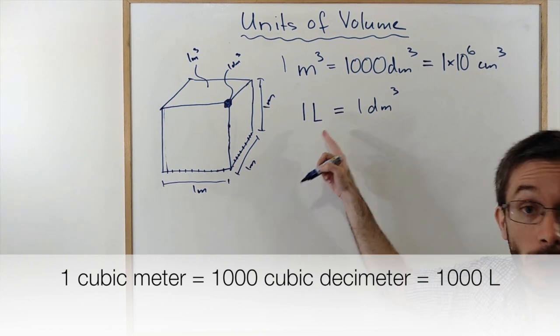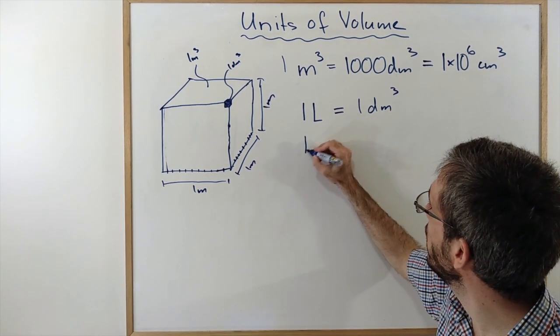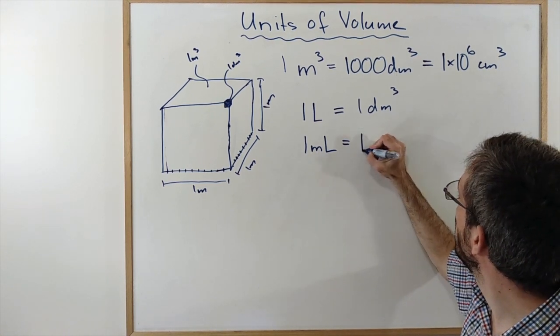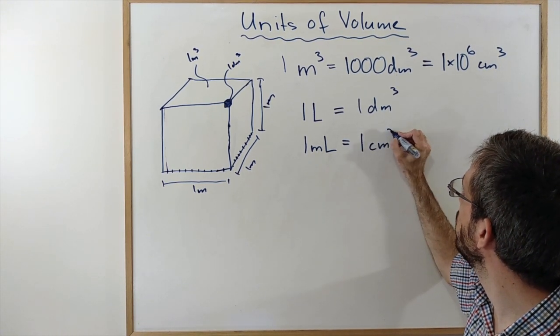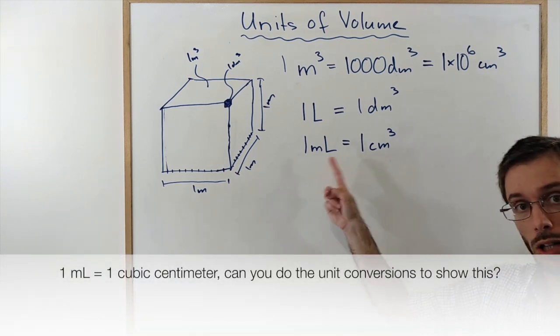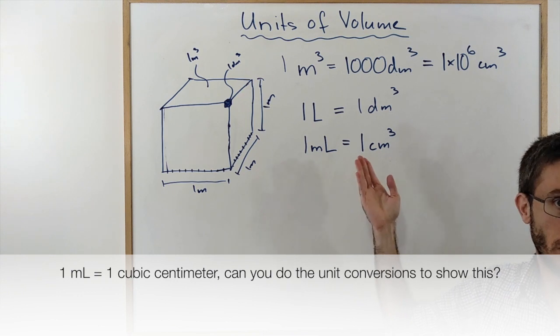Another unit that is now derived from the liter, that is very frequent, is the milliliter, which is equal to 1 centimeter cube. Would you be able to do the math to show me that these two are actually equal? So, give it a try.